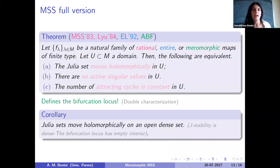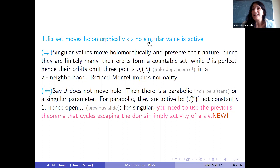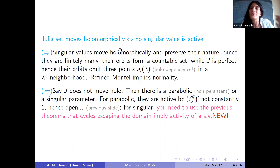The complete Mañé-Sad-Sullivan theorem for natural families of rational, entire, and meromorphic maps — with the meromorphic case being our contribution — states: taking a domain U in our parameter manifold, the following are equivalent: (A) Julia sets move holomorphically; (B) there are no active singular values. And then equivalent to these: the number of attracting cycles is constant. The equivalence between A and B gives both characterizations of the bifurcation locus — the set where singular values become active, and the complement of the stability set where everything moves holomorphically.